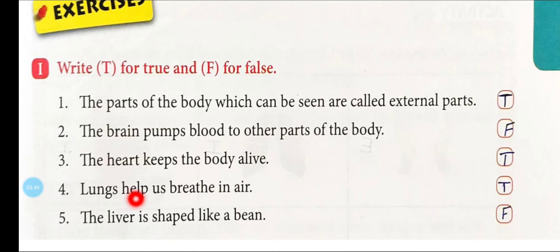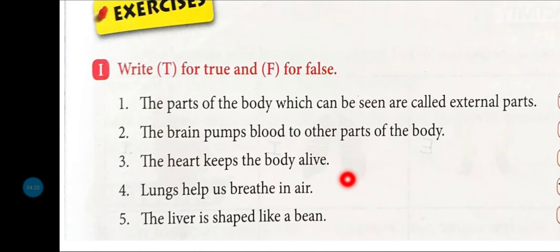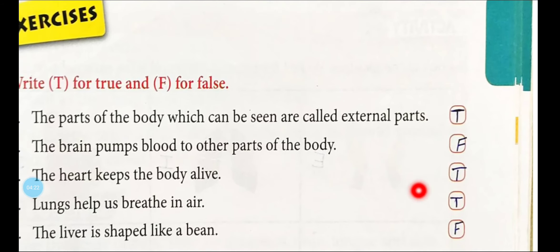Number five: 'The liver is shaped like a bean.' Liver का shape यहाँ bean के जैसा बताया है, जबकि bean के जैसा shape किसका होता है — kidneys का। मैंने बताया था, राजमा की जैसा उसका shape होता है, लाल कलर का। तो यहाँ पर liver लिखा हुआ है यह गलत है — liver की जगह kidney होता तो यह sentence correct होता। तो यह false statement है, उसके लिए हम लिखेंगे F for false।